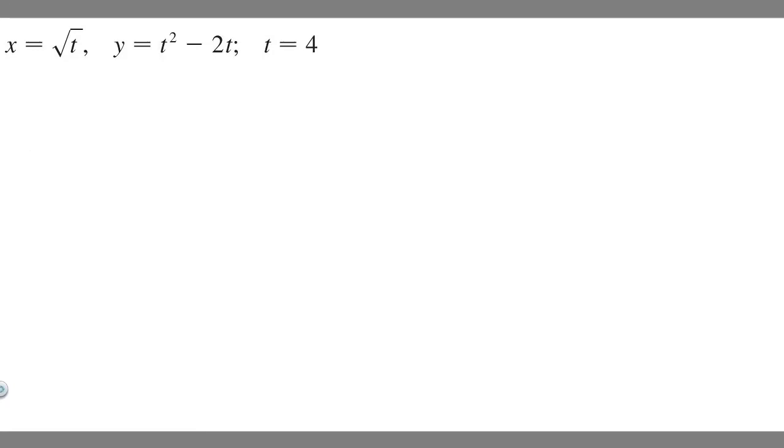In this problem, we're told to find an equation of the tangent to the curve at the point corresponding to the given value of the parameter. We're given two different parametric equations and a t value, and we're trying to find the equation of the line tangent to the curve at this point.